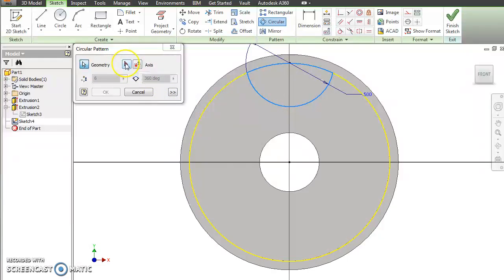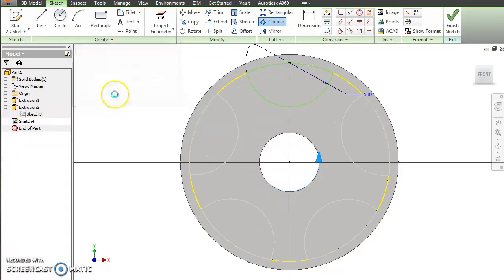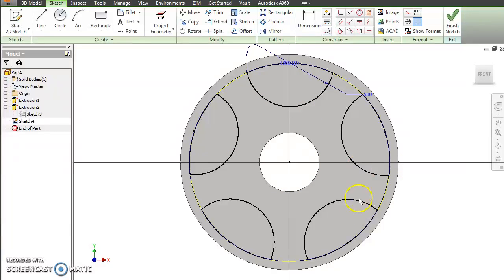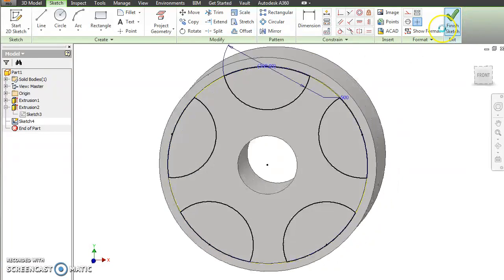And then you're going to select the axis. In this case, the axis is going to be a point because this is a 2D plane. So we're going to rotate around a point. So we'll select that and select our center point. I don't want six. I want five. Hit OK. And then now I have patterned that around. Go ahead and finish the sketch.